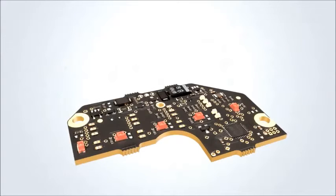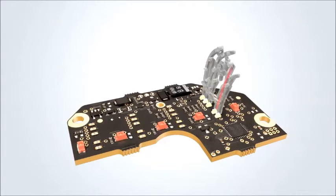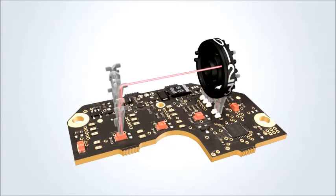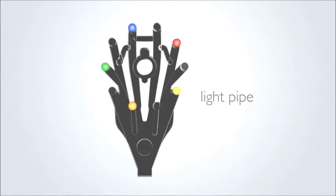Light is sent by the five LEDs located on the circuit board through the sending light paths. Depending on the rotational position of the number wheel, the light is either blocked or allowed to pass through the receiving light pipe on the opposite side of the number wheel.